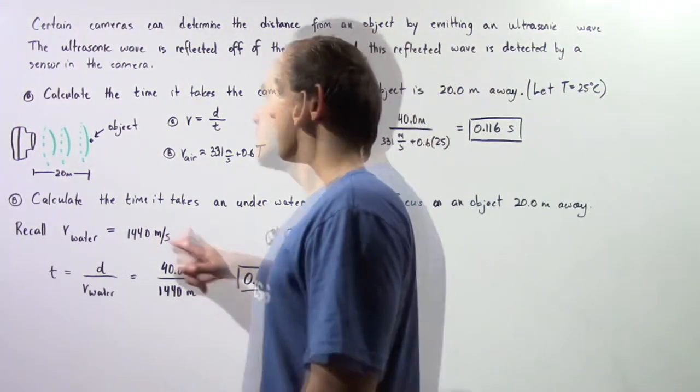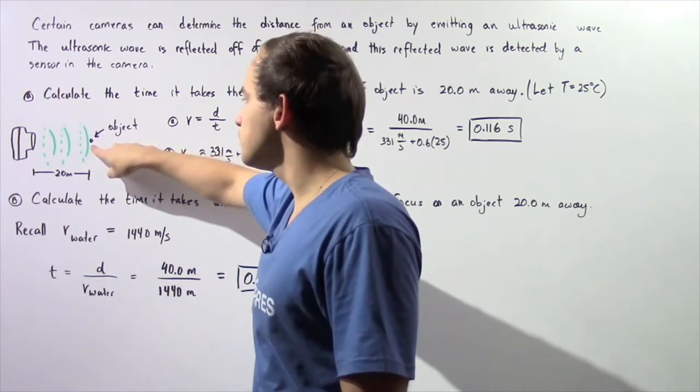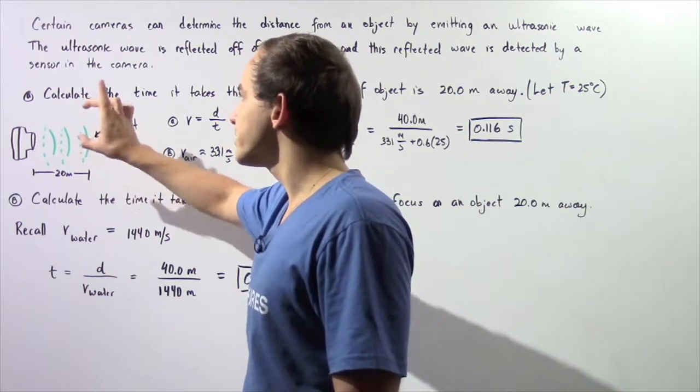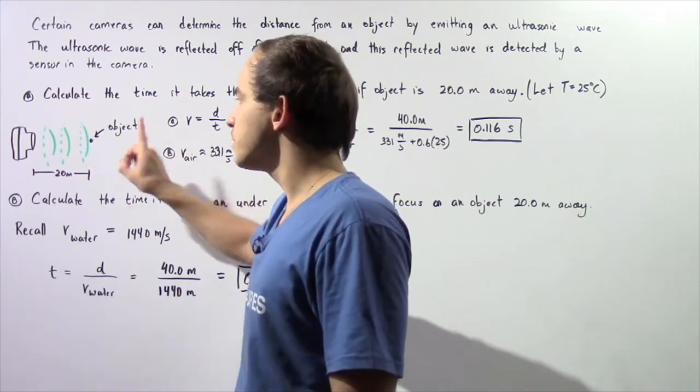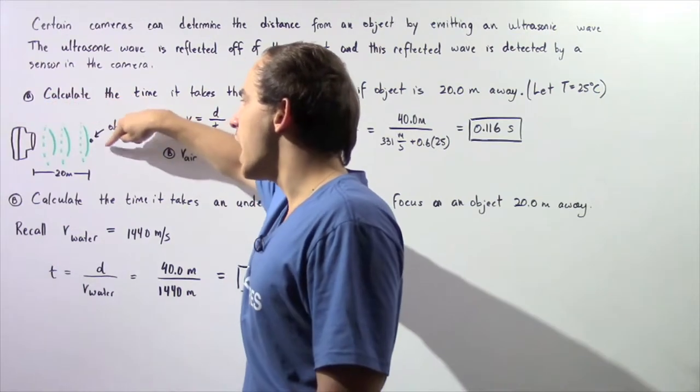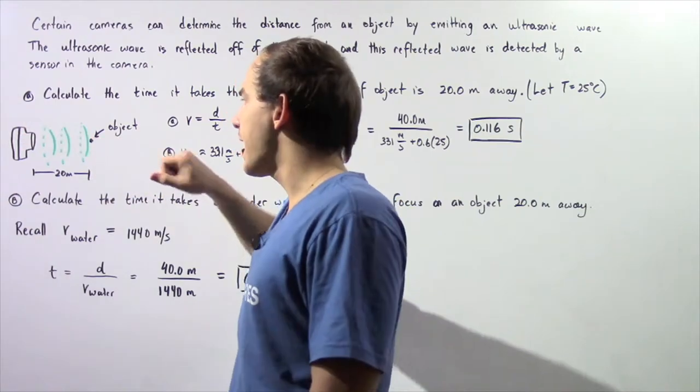Let's begin with part A. Suppose a camera is autofocusing on an object that is 20 meters away. The ultrasonic wave produced by the camera has to travel 20 meters to the object, reflects, and then travels 20 meters back.